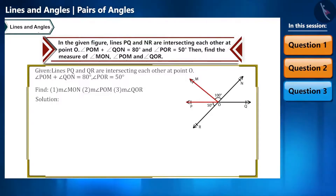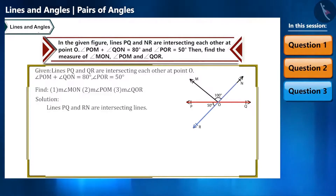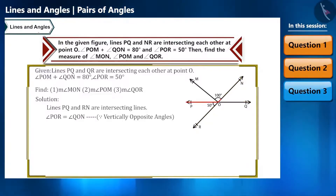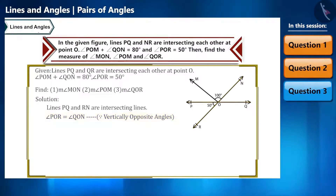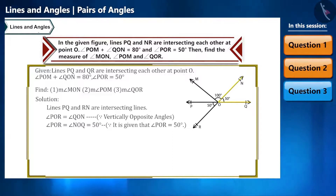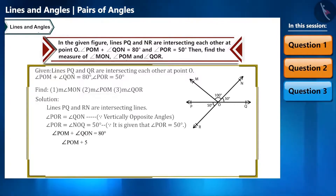Now let's find angle POM. We know angle POM plus angle QON equals 80 degrees. Since lines PQ and RN intersect, angle QON equals angle POR (vertically opposite angles), and angle POR equals 50 degrees, so angle QON equals 50 degrees. Substituting: angle POM plus 50 equals 80, giving angle POM equals 30 degrees. As a hint for the last angle: angle QOR and angle PON are vertically opposite angles.